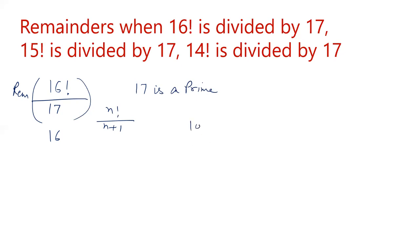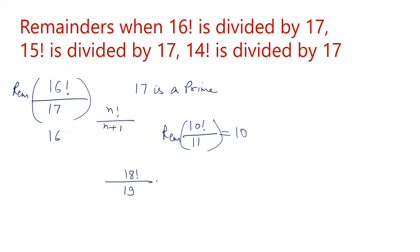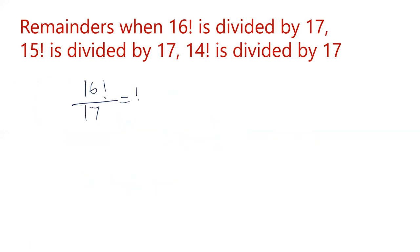Let's take one more example: 10 factorial divided by 11. Since 11 is a prime number, n is 10, n plus 1 is 11, which is prime. So the remainder when 10 factorial is divided by 11 is equal to 10. So when you take any prime number and take one less than that number as the factorial in the numerator, the remainder will always be the prime number minus 1. This is the general format of Wilson's theorem. So the answer to our question — 16 factorial divided by 17 — the remainder will be 16.